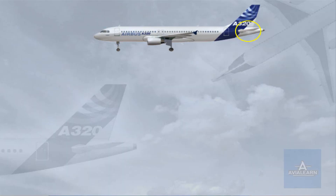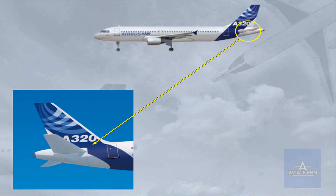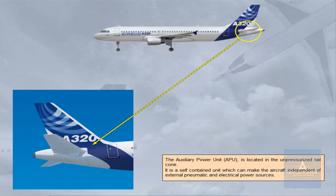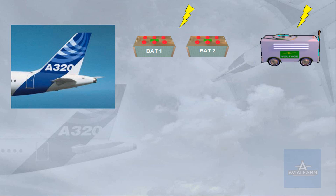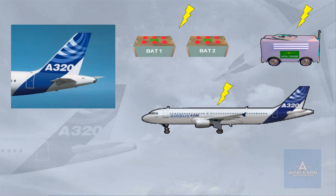The auxiliary power unit, APU, is located in the unpressurised tail cone. It is a self-contained unit which can make the aircraft independent of external pneumatic and electrical power sources. The APU may be started using the aircraft batteries, an external power source, or the normal aircraft AC power.